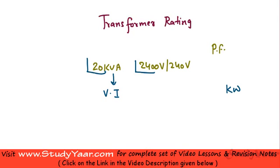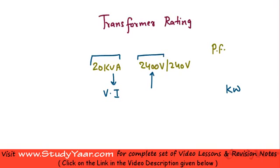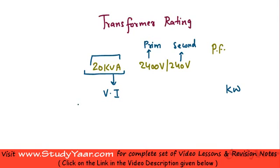These are all RMS values, by the way. When we are talking about AC, we are always talking about RMS values. So this means that you can have a maximum 20 kVA across any terminals for your transformer, a maximum of 2400 volts in your primary, and a maximum of 240 volts across your secondary. This is the maximum value of voltage in primary and the maximum value of voltage in secondary.